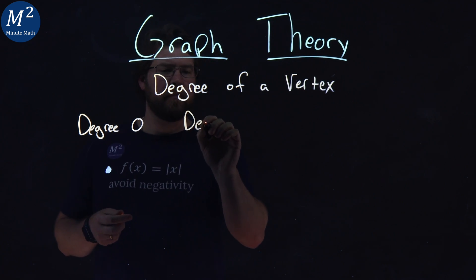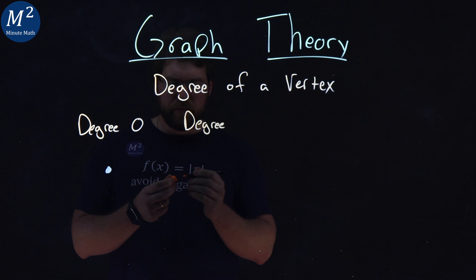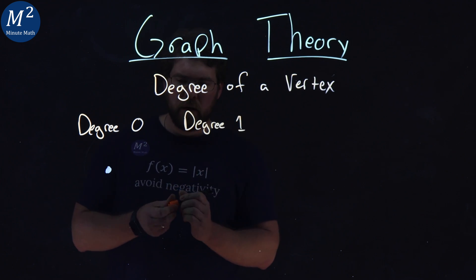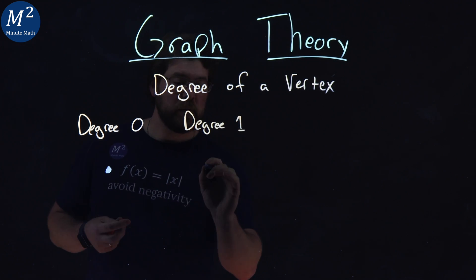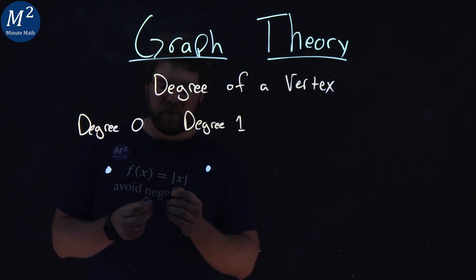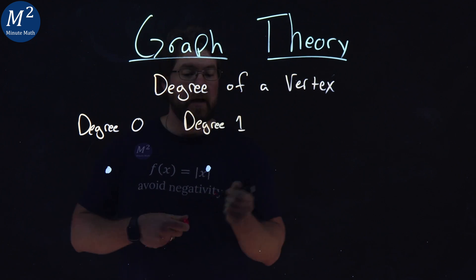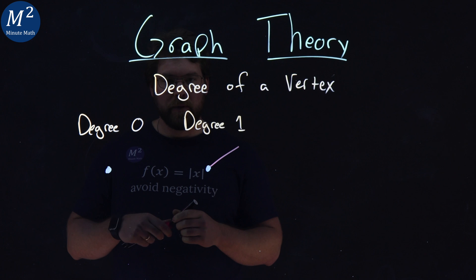A degree one, that is a single vertex right here with a single edge coming from it.